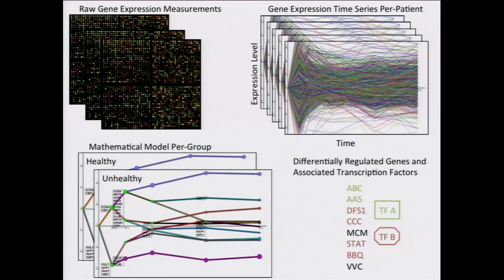Here's how it works. Imagine that you're a patient, and you go to the doctor, and when you do, the doctor takes a blood sample. Using an experiment called microarray, we can get a reading of all of the expression levels of the genes in your body. We do this for each patient every time he goes to the doctor, and also for a whole cohort of patients with the same disease. Once we have this data, we can build mathematical models — one model for a healthier group of patients, and one model for a sicker group of patients.